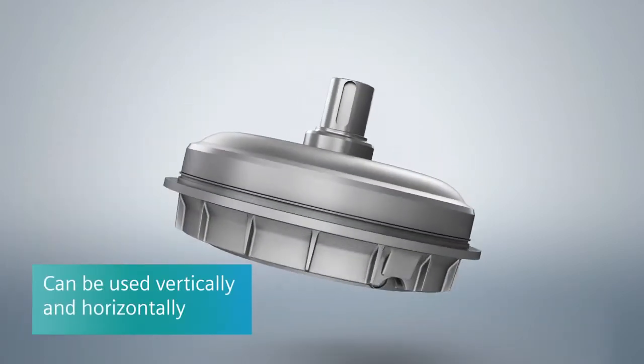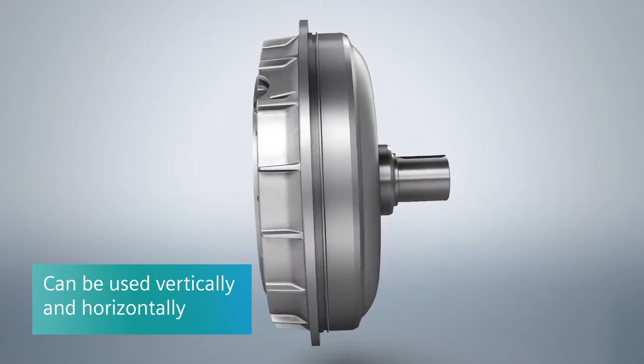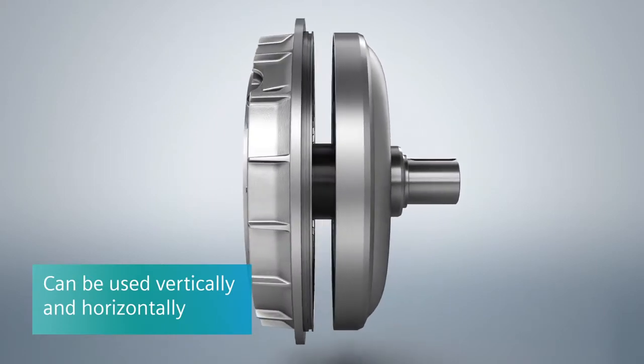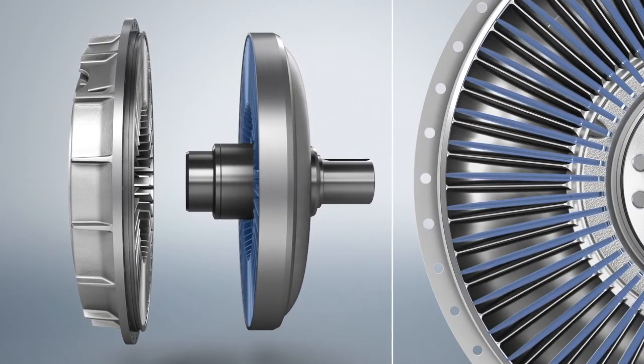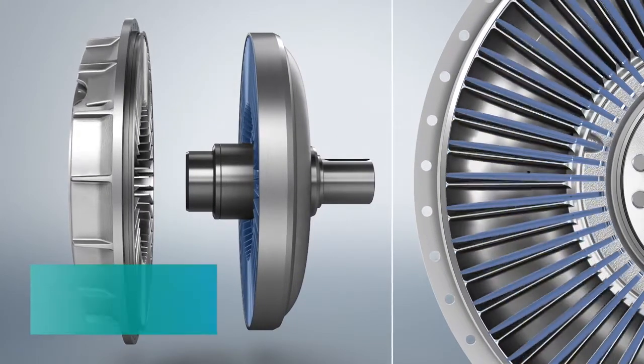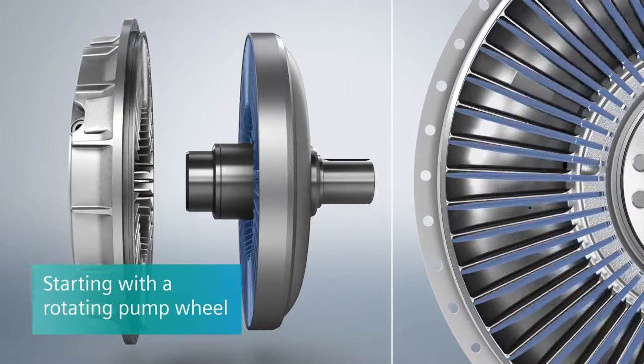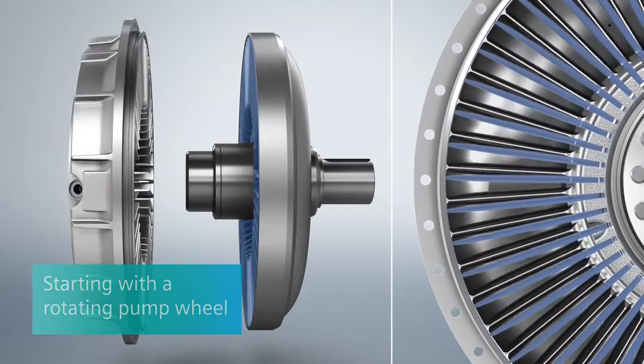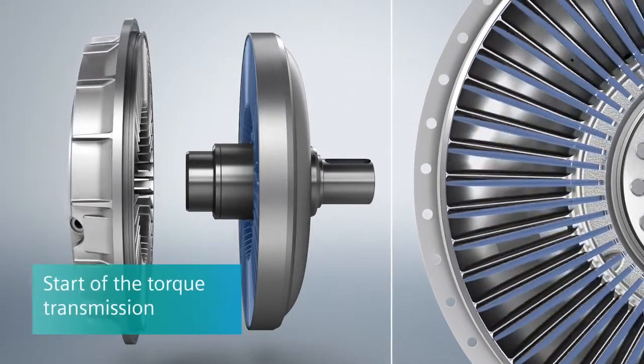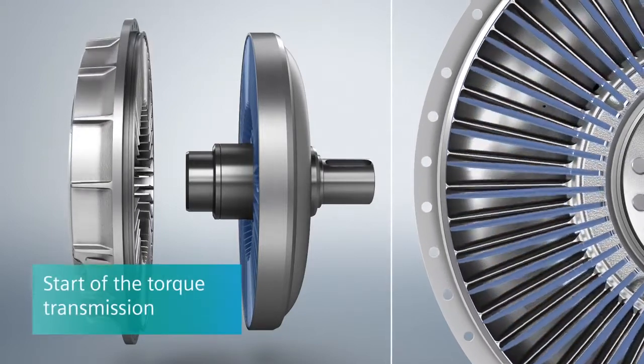The Fludex can be used vertically and horizontally. In a horizontal configuration, the Föttinger principle can be shown differently. The blow-up diagram shows the initial situation for a horizontal installation. At first, only the pump wheel rotates. Slowly, the turbine wheel begins to turn as well. The torque transmission begins.